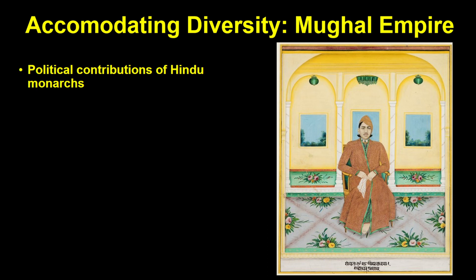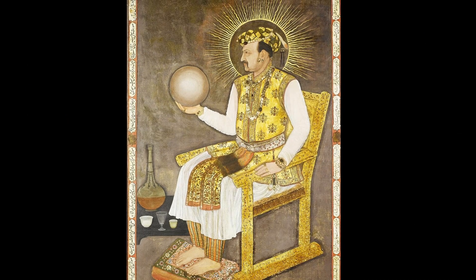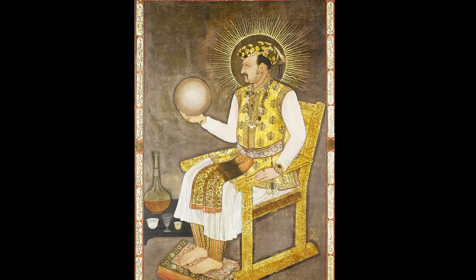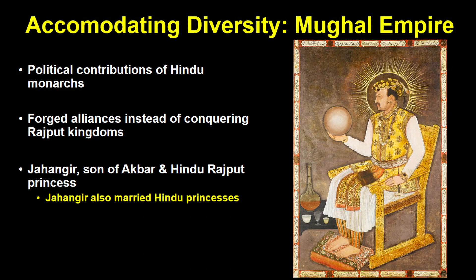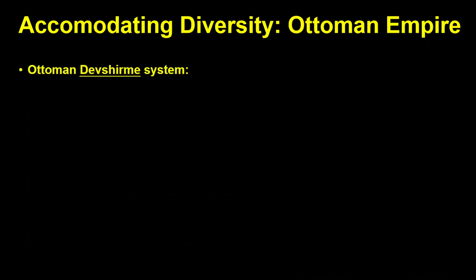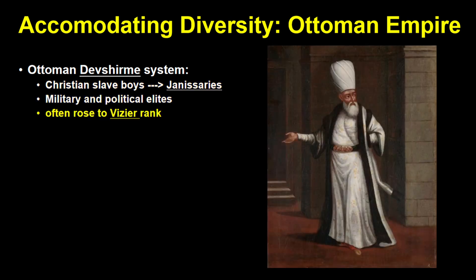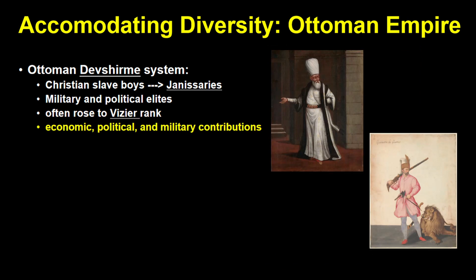Politically, Akbar and his successors also made use of Hindu monarchs such as those of the Rajput kingdoms. Rather than attempting to conquer them all, they forged marriage alliances. Jahangir, the fourth Mughal emperor, was the son of Akbar and a Hindu Rajput princess, and Jahangir himself also married some Hindu princesses. These alliances meant the Hindu kingdoms retained control over their territories in exchange for pledging loyalty and military support to the Mughal Empire. The Ottomans made use of the Devshirme system, which took Christian slave boys and trained them as military elites — the Janissaries — and political elites that often rose to the rank of vizier, a clear example of how states utilized the contributions of ethnic groups.